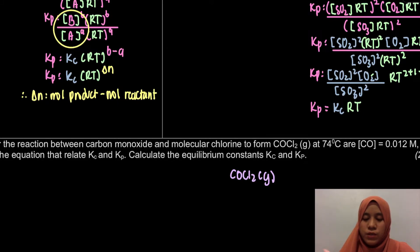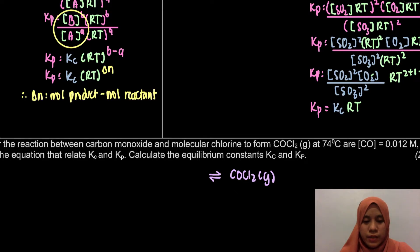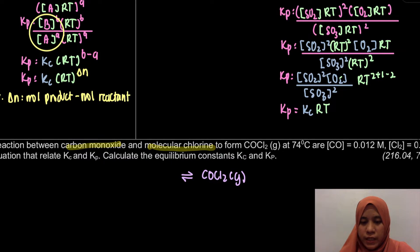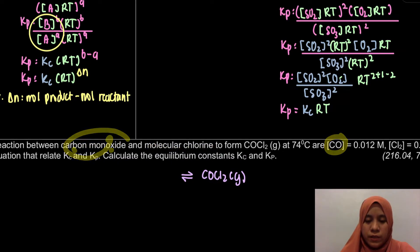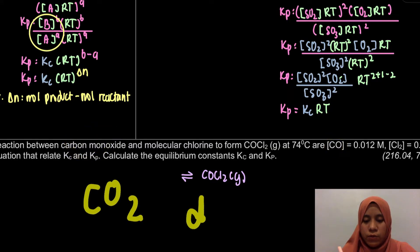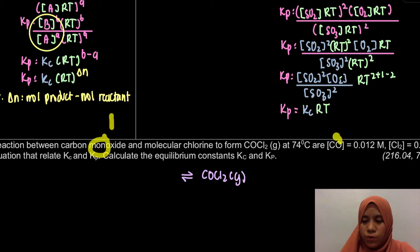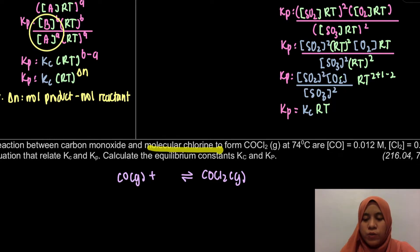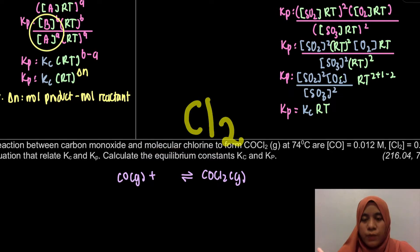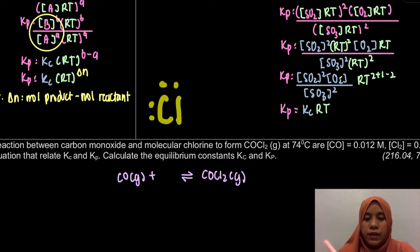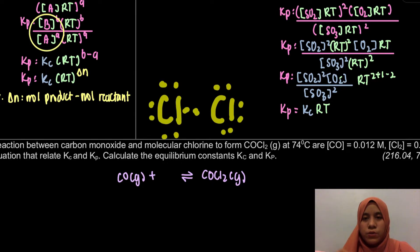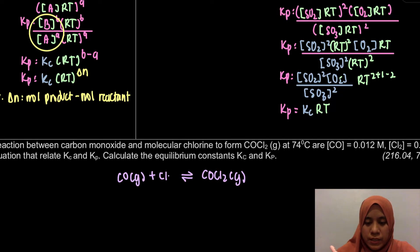Since it is a reversible reaction at equilibrium, we write the double arrow. The reactants are carbon monoxide (CO, a gas) plus molecular chlorine. Chlorine is group 17, so it forms Cl2. Each chlorine atom has 7 valence electrons and they share to form an octet, so Cl2(g) is our reactant. The equation is: CO(g) + Cl2(g) ⇌ COCl2(g).